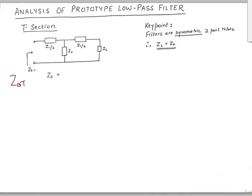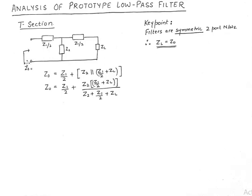Looking from port 1 and 1-dash, we see that Z1/2 is in series with this arm in parallel with the other arm. From port 1, you see Z1/2 in series with Z2 parallel to the series arm, and that series arm has an impedance of Z1/2 plus ZL. So this is the starting point — we are simply calculating the total impedance as seen from port 1.